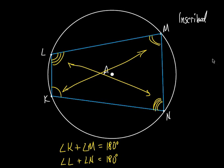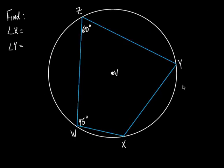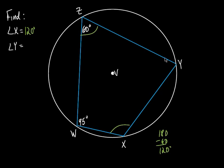Let's do one final example. If this angle is 60 degrees, the opposite angle X is supplementary to it, so 180 minus 60 equals 120 degrees. Then the other angle is opposite 95 degrees, so 180 minus 95 is 85 degrees. If you add all four angles up, they sum to 360, and they do. It's as easy as that. Enjoy the lesson, and we'll see you next time.